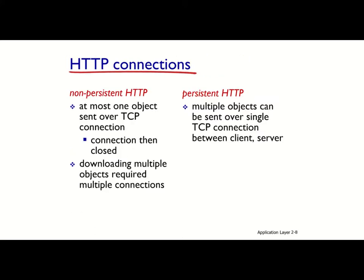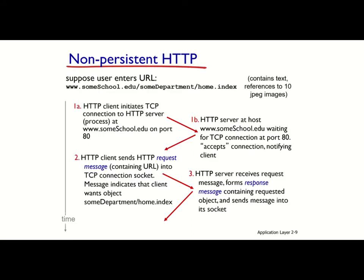There are two types of HTTP: non-persistent HTTP and persistent HTTP. In non-persistent HTTP, at most one object can be sent over a single TCP connection — you cannot send multiple objects over one TCP connection; if you want to send multiple objects you have to create multiple TCP connections. However, for persistent HTTP you can send as many objects as you want in a single TCP connection between client and server. Non-persistent HTTP is therefore slower than persistent HTTP because each time you want to get an object you have to spend time to establish a new connection.